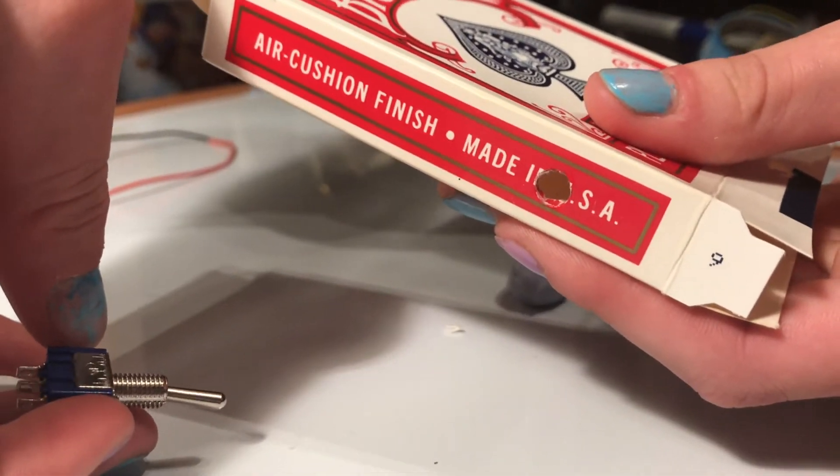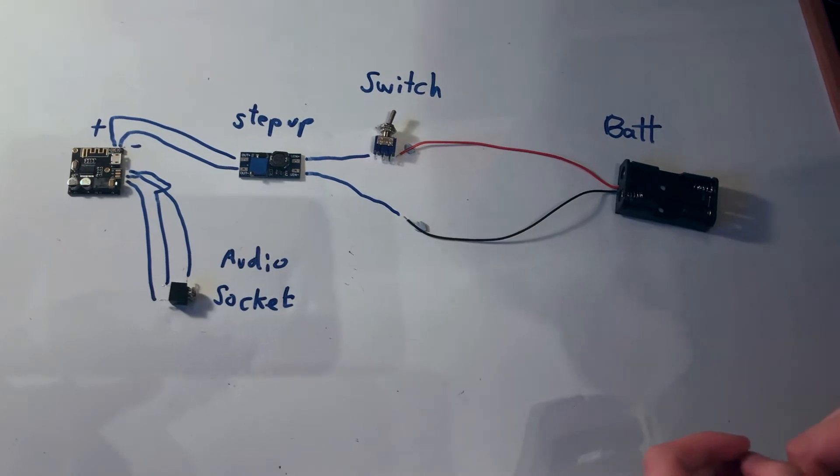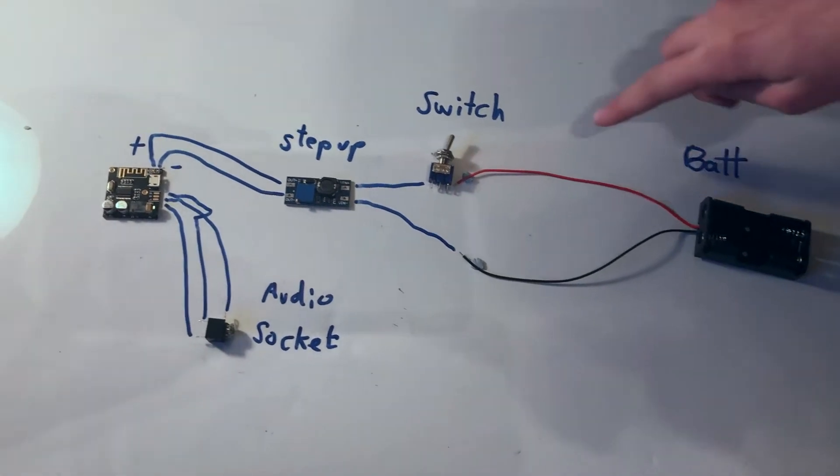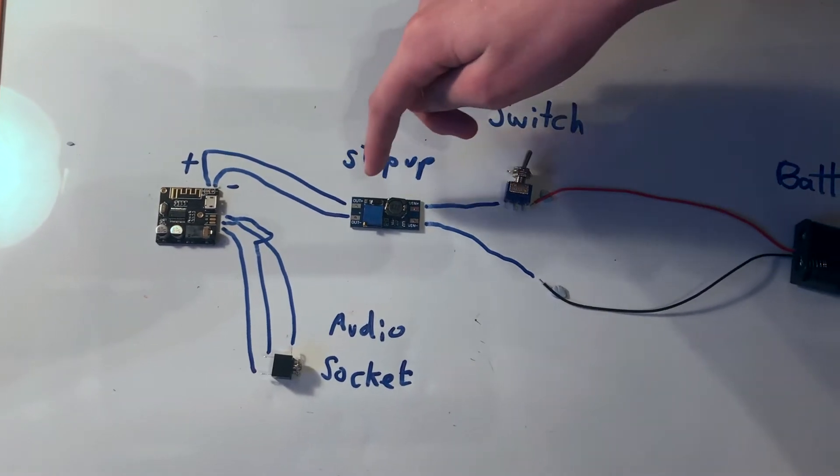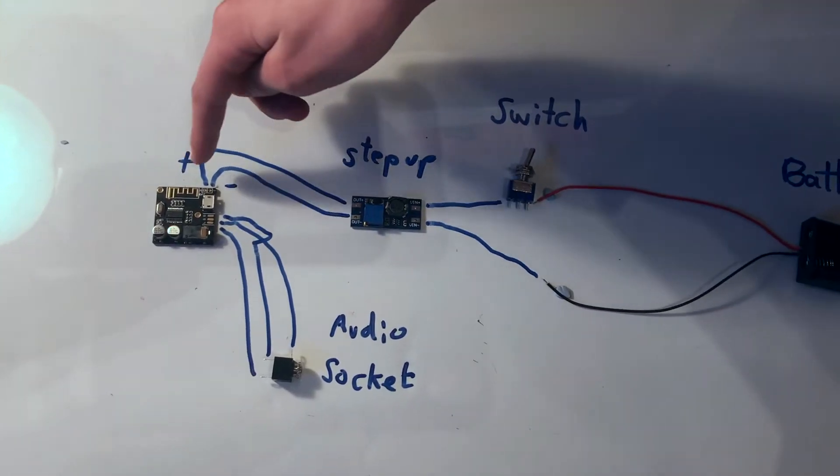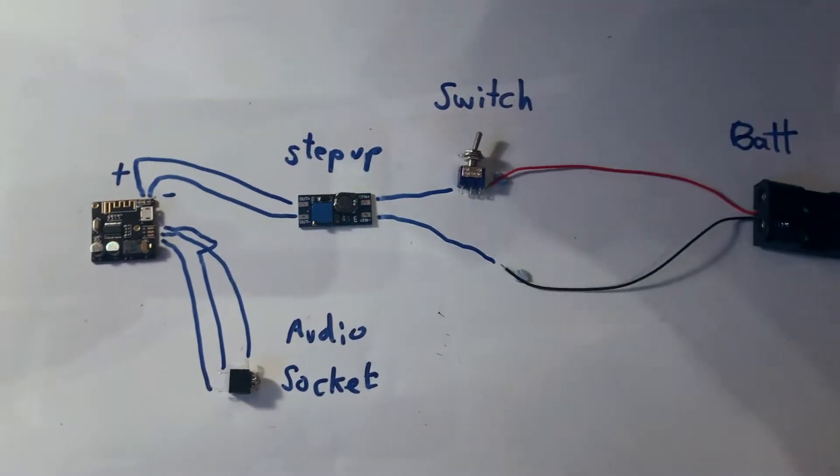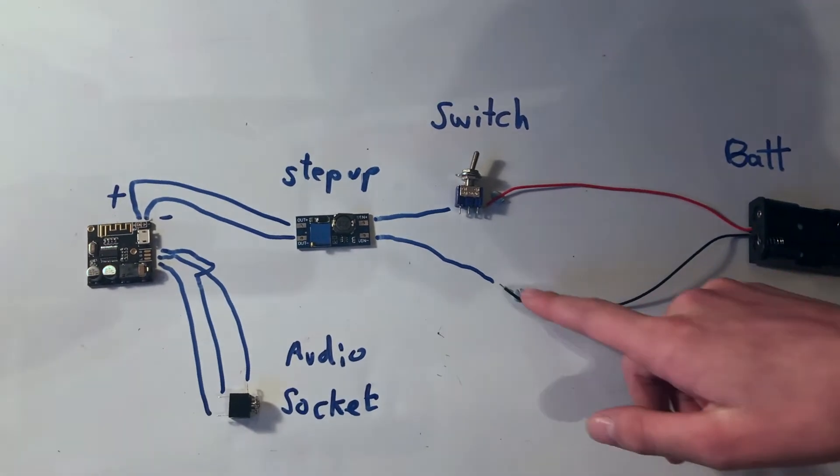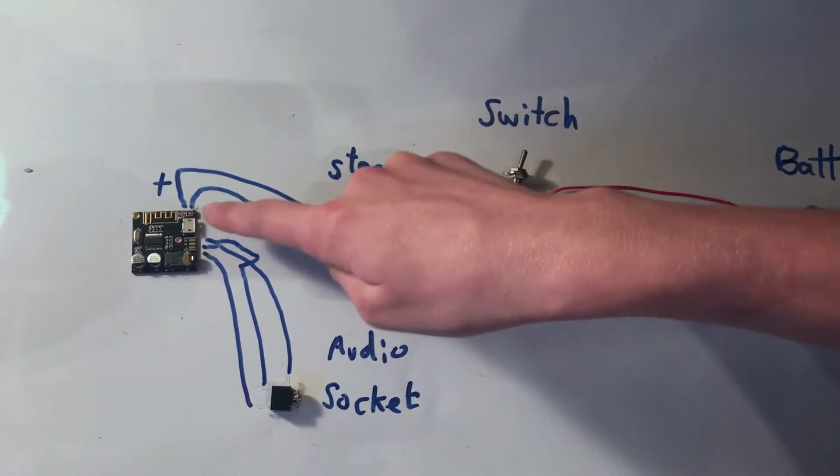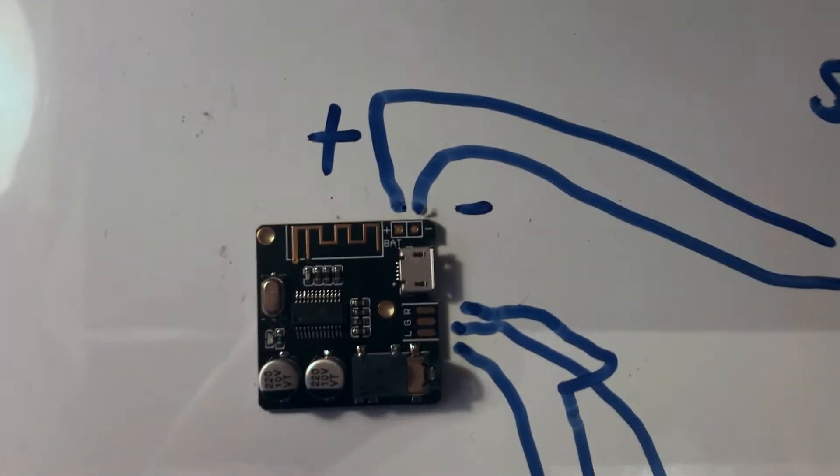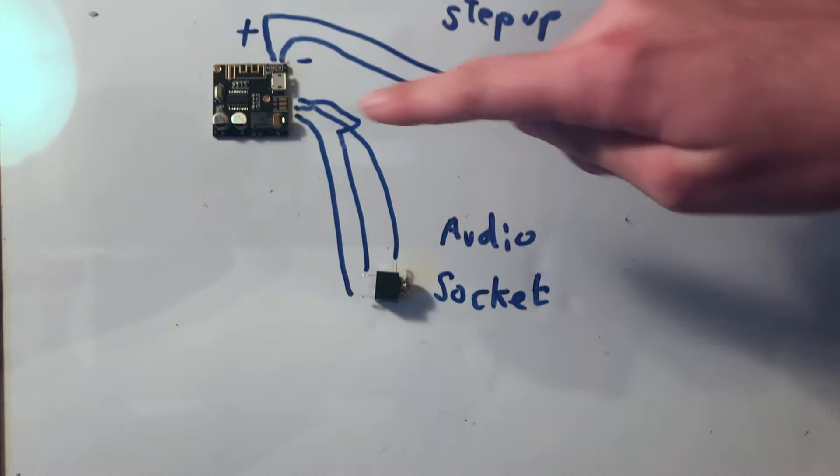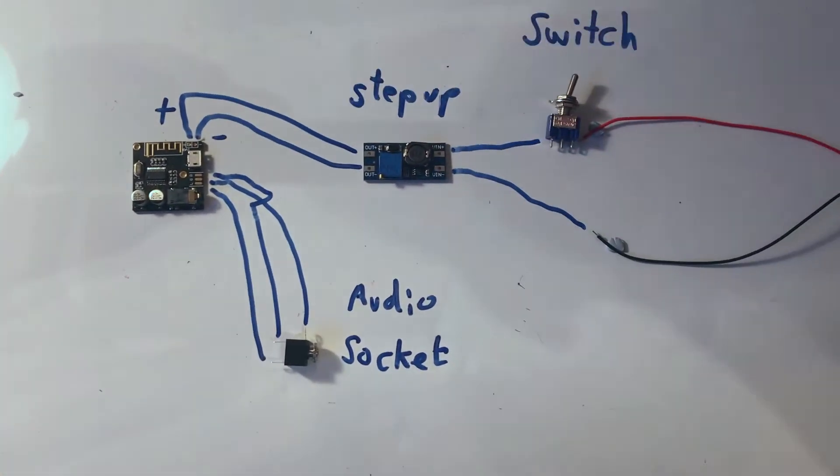Now for the electronics. Here's the plan: we've got our battery and we've got the positive going through our switch and into our step up just to step up the voltage. And then we've got that going into our Bluetooth board, and then the same on the other side of the battery on the negative side, going through the step up and then into our ground of our Bluetooth board. And then we've just connected up our socket here. So we've just got our left and right and ground into our Bluetooth board.